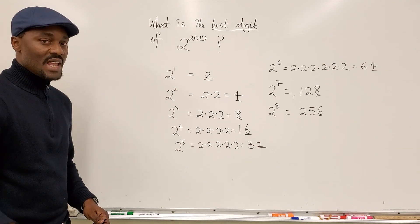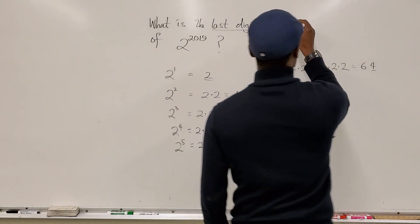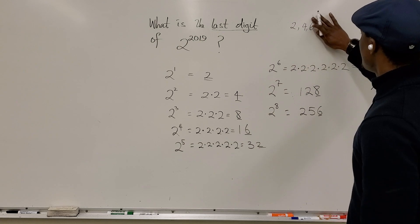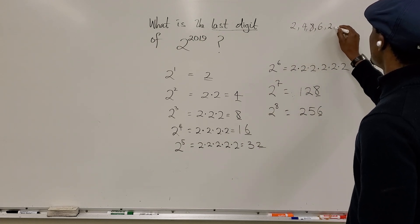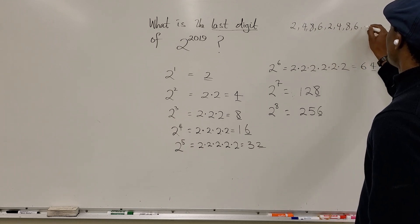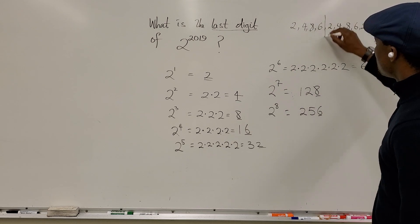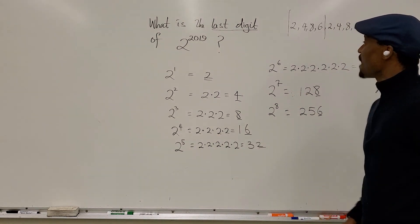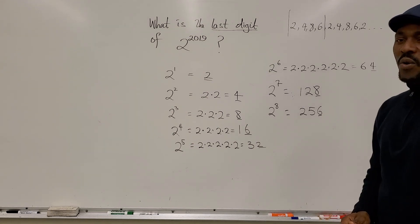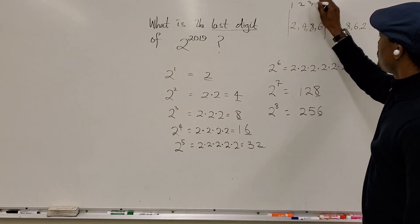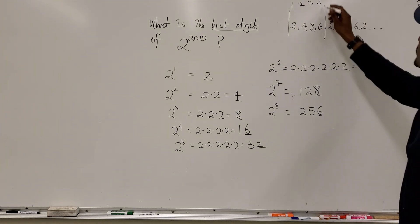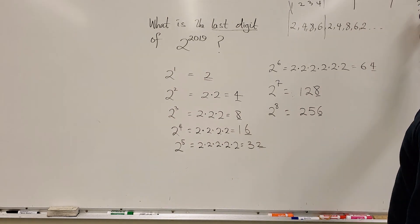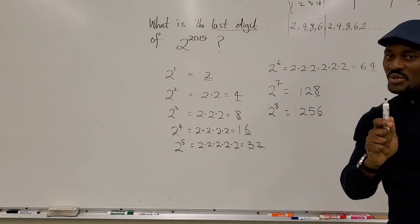The 4 digits keep repeating in the cycle: 2, 4, 8, 6. So all you have to do is figure out how many complete cycles of 4 fit into 2019. By the time you get to 2019, you've done cycles of 4 over and over. How many cycles of 4 will you get in 2019? You just divide 2019 by 4.